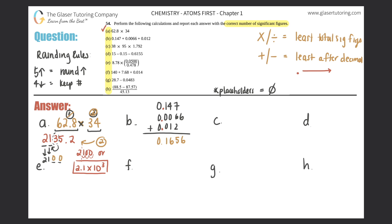How many sig figs after the decimal for the first number? Three. For 0.0066, the leading zeros don't count, so just two sig figs. For 0.012, the leading zero doesn't count, so one and two — two sig figs. The smallest is two, so the answer needs two sig figs. The first two digits are 1 and 6; the next digit is 5, so round up: 0.17 is the answer for b.